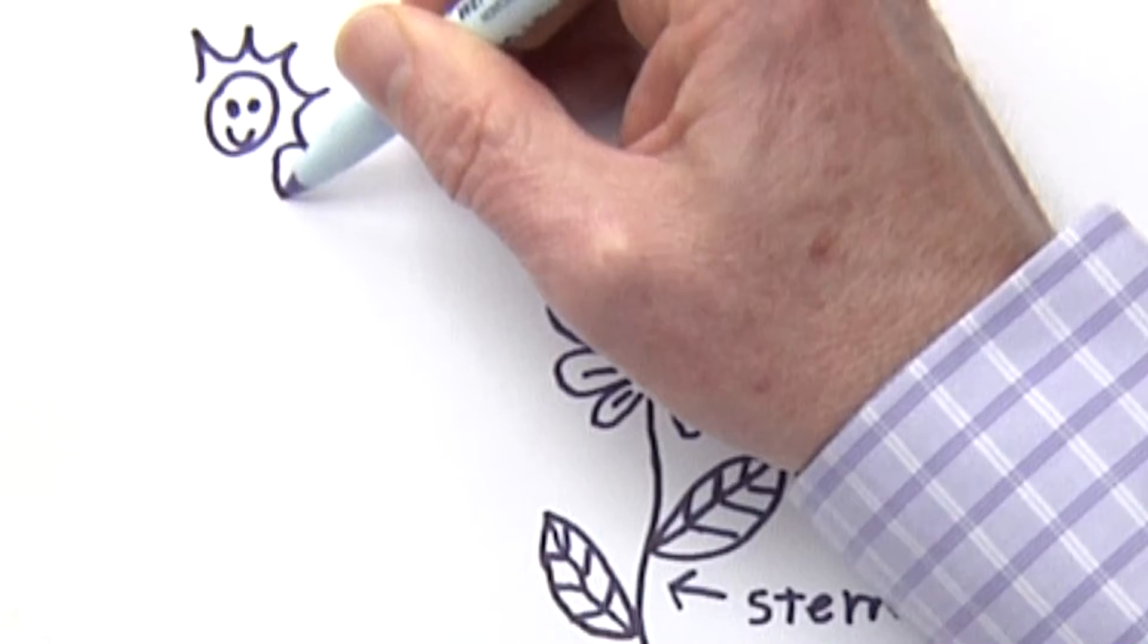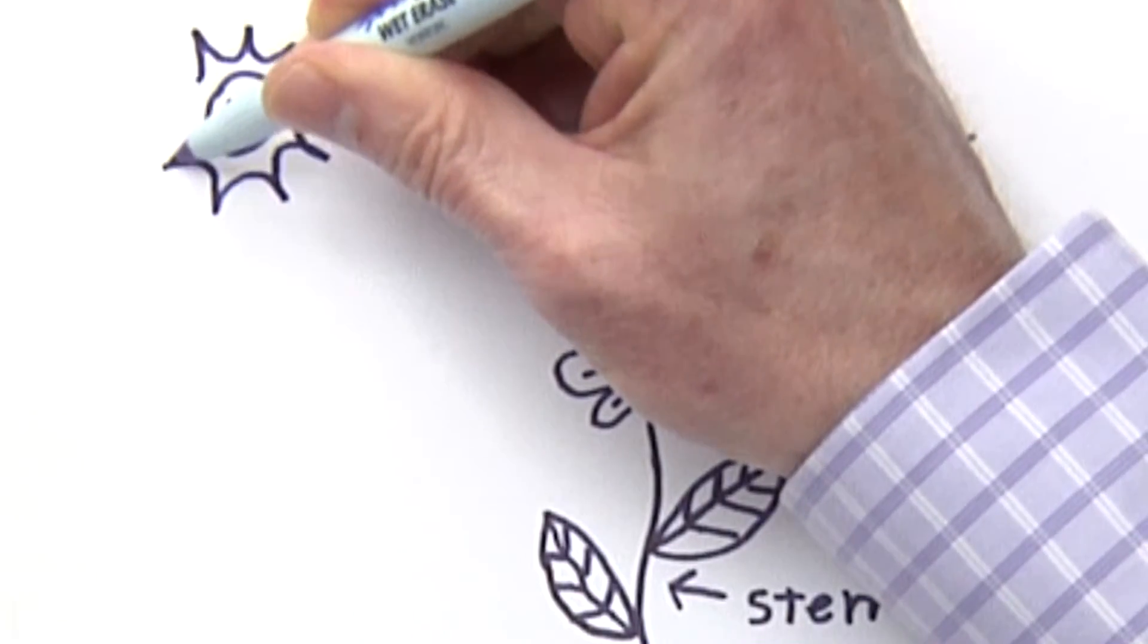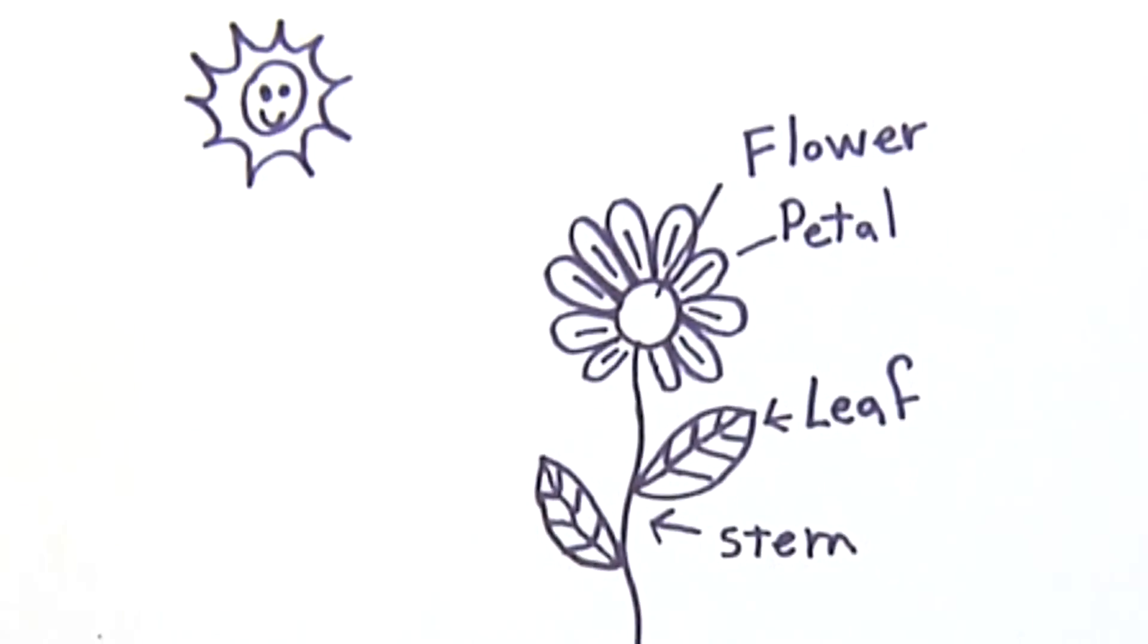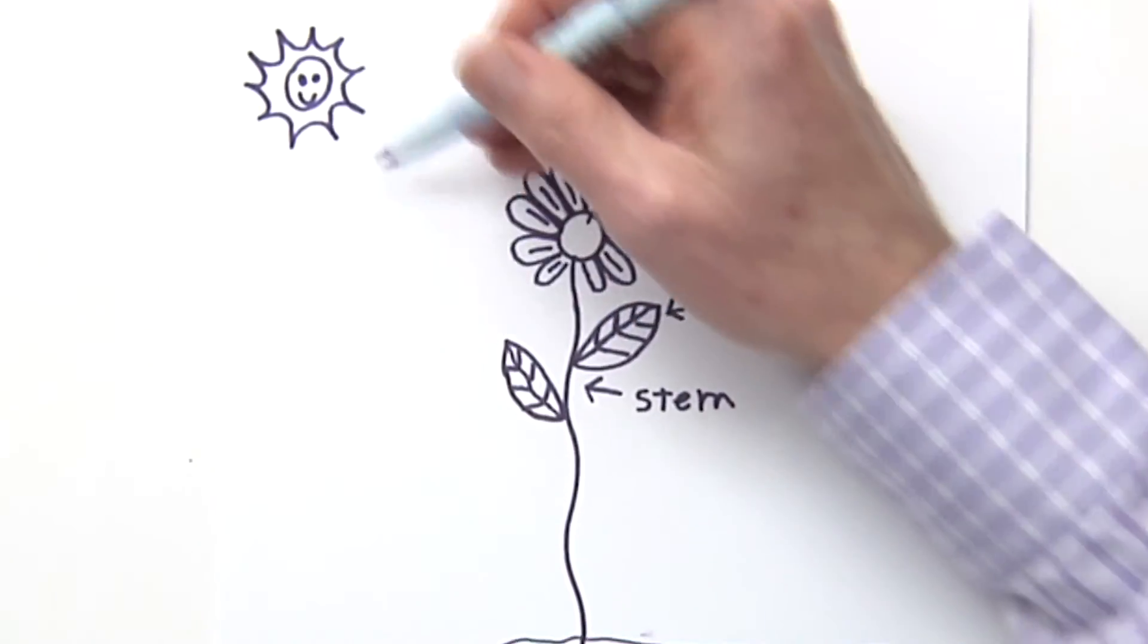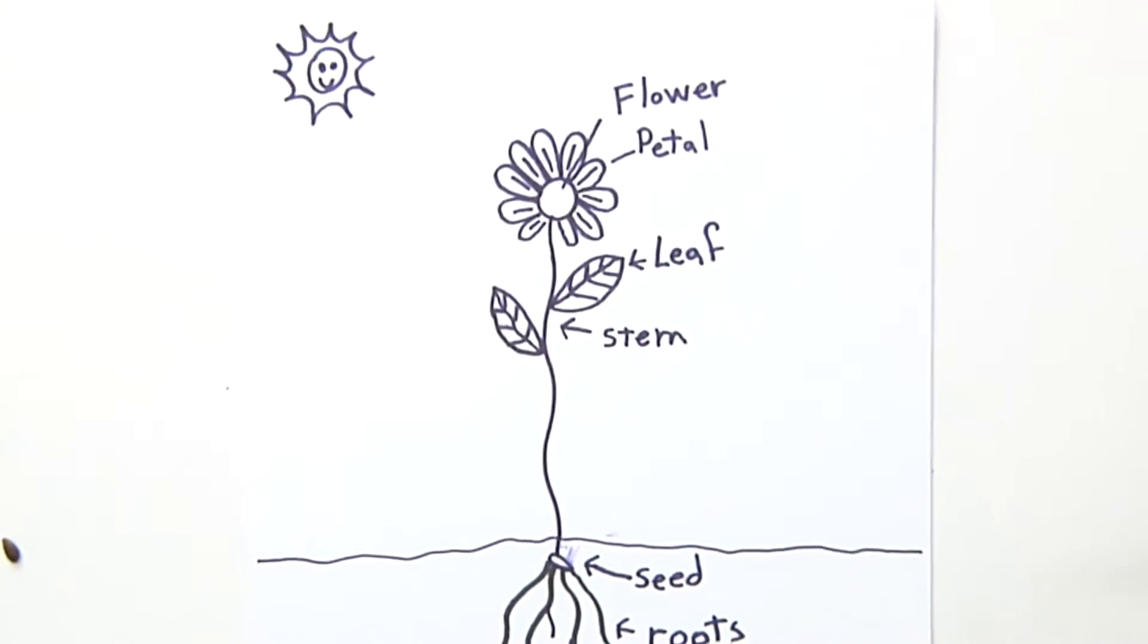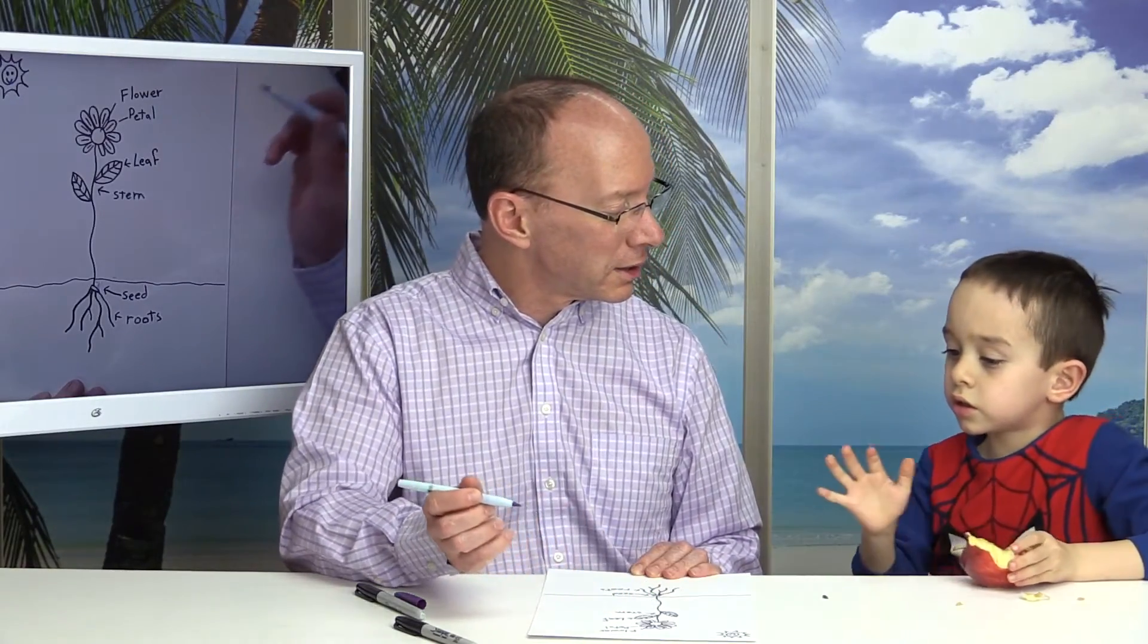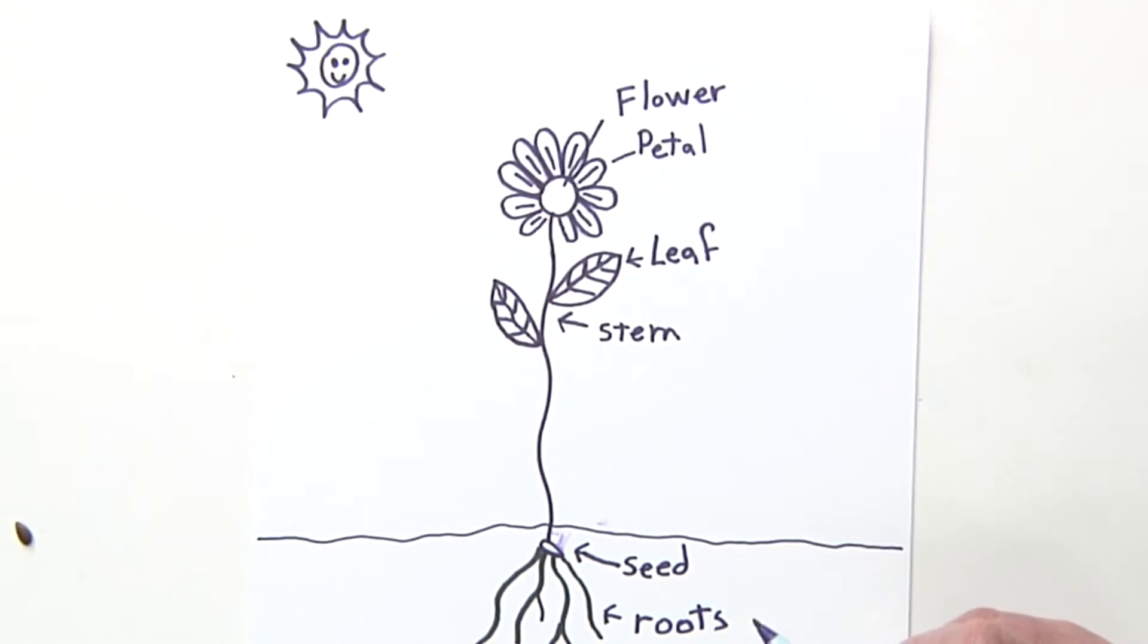I think any time the sun is out, I am happy. And so the leaves get their energy from the sun. And what does the stem support? The leaves and the flower. It supports the leaves and the flower. Excellent, Lucas.